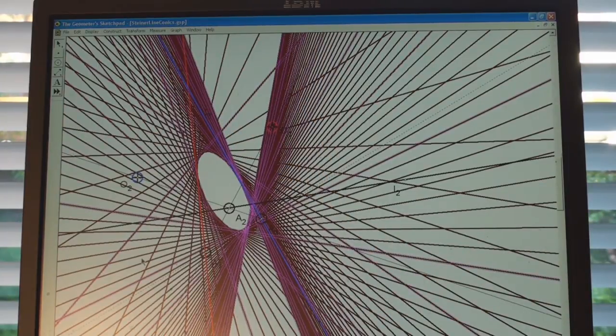And we see that we get an ellipse being enveloped by this family of lines. So it's a way of getting what's called a line conic from a projectivity between two lines.